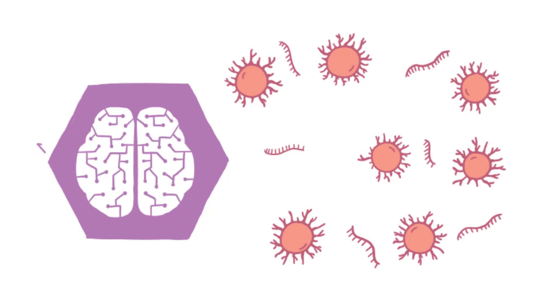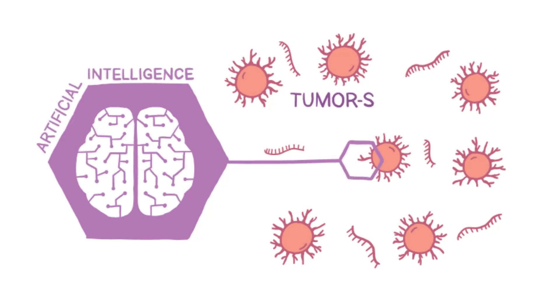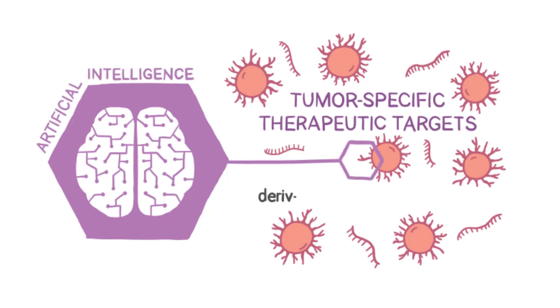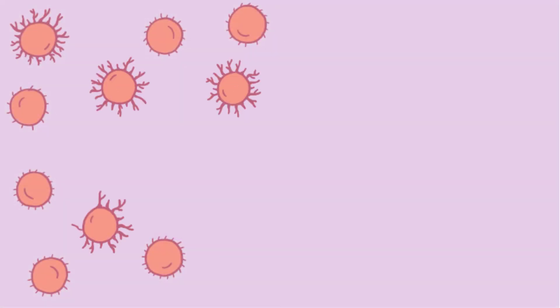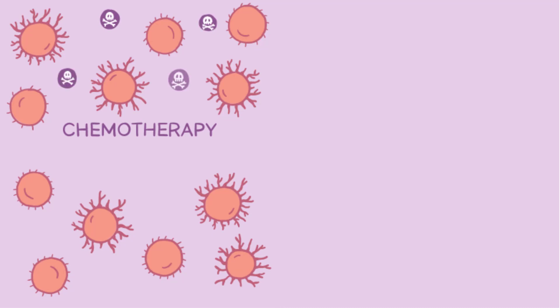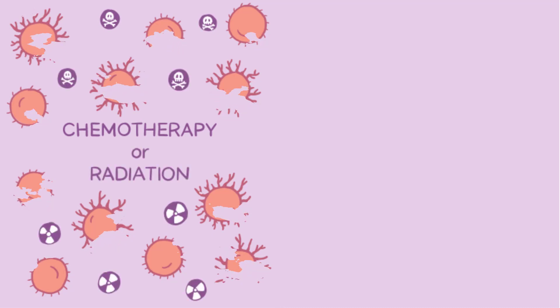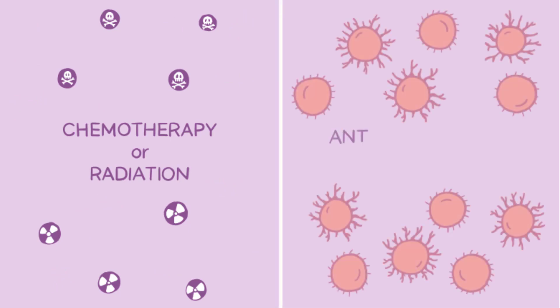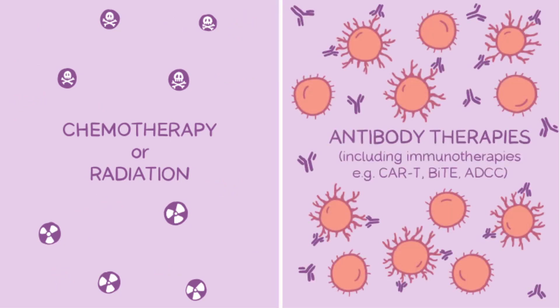Invisagenix is using artificial intelligence to identify tumor-specific therapeutic targets derived from RNA splicing. Treating cancer can be tricky because treatments like chemotherapy and radiation indiscriminately kill normal healthy cells as well as cancer cells. That's why antibody therapies, which target cancer cells specifically, are so promising.